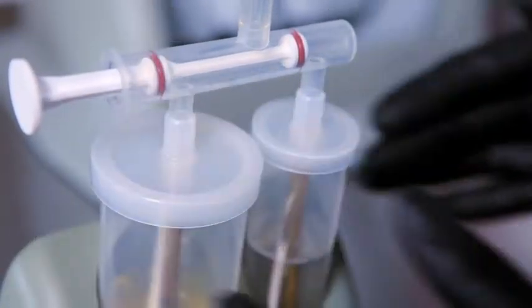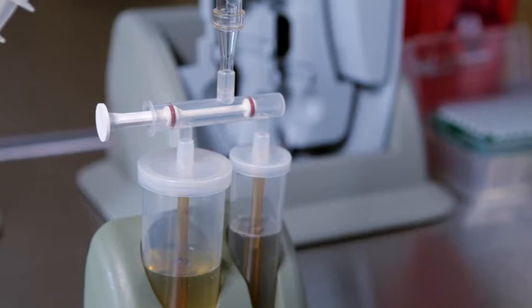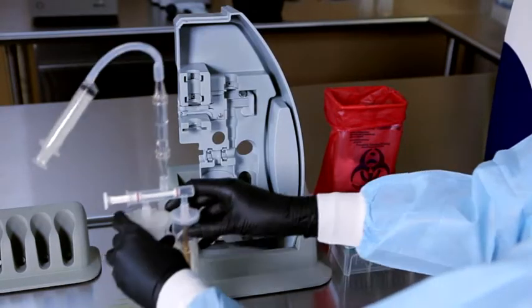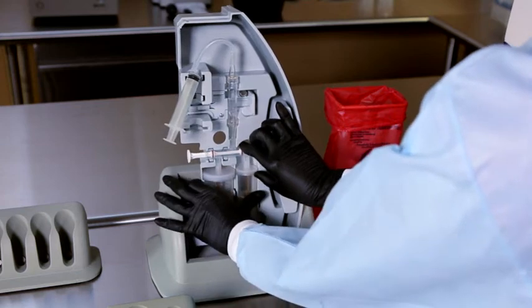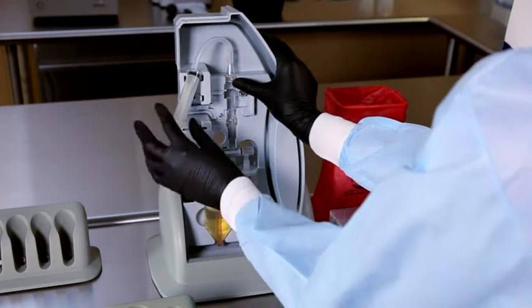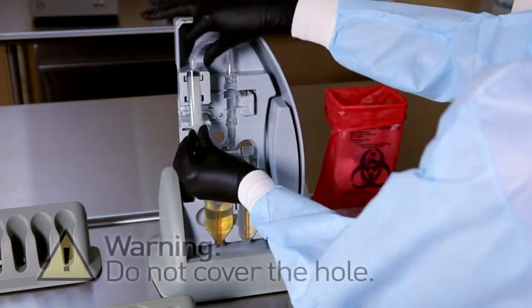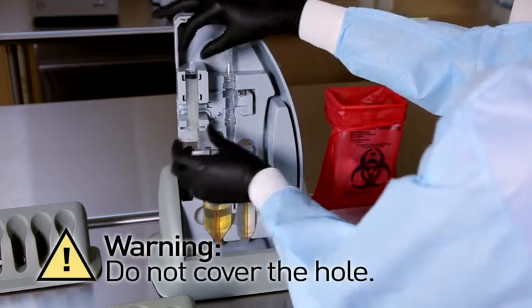Now connect the capture chamber. Insert the valve body into the spout of the sample and elution tube lids. Place the assembled consumable into one of the five cartridge holders. Push firmly on each section to make sure it's placed correctly in the cartridge. Be careful not to cover the hole during this step.